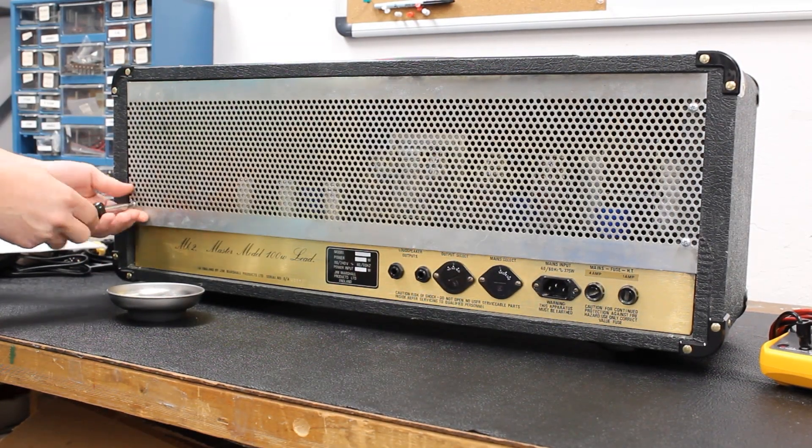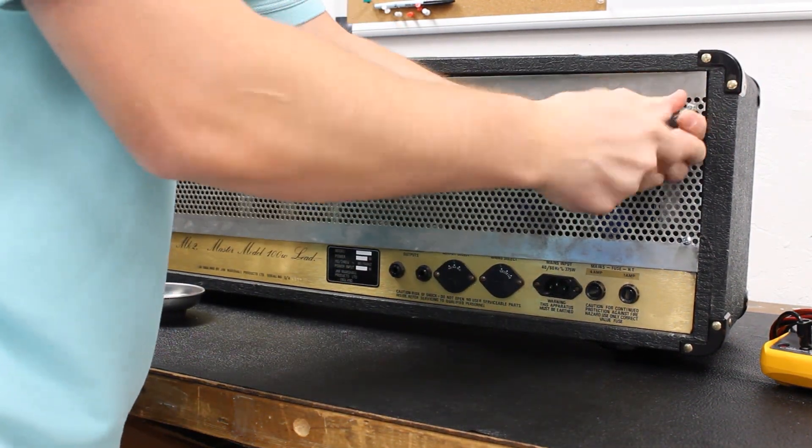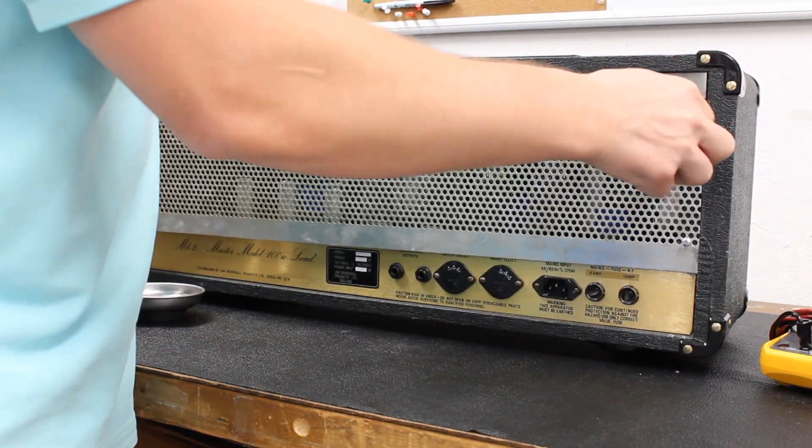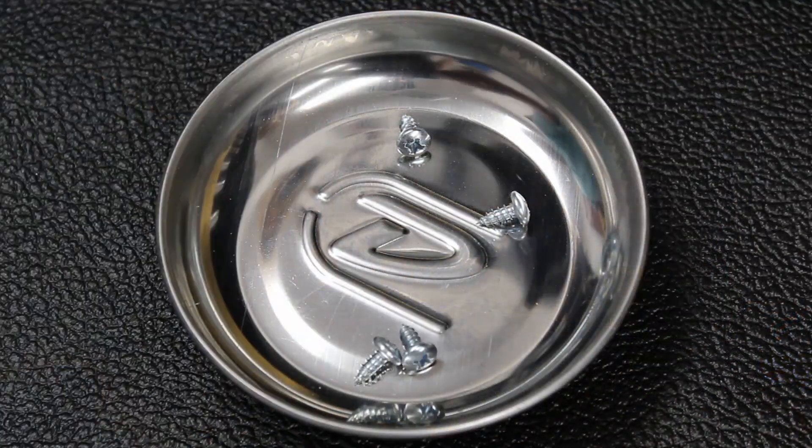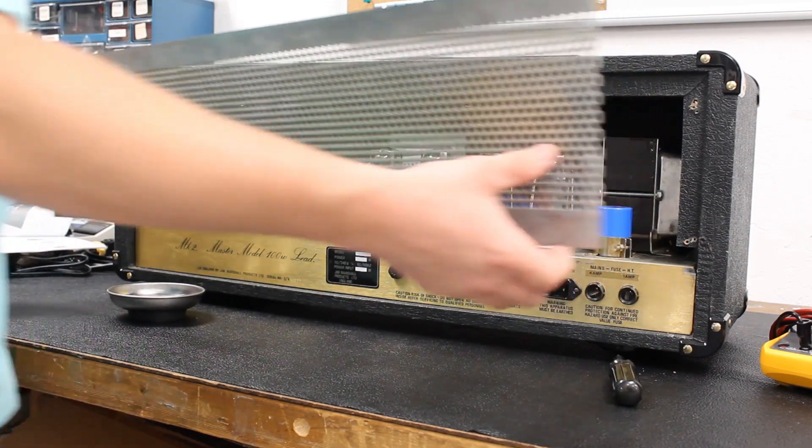We will start by disassembling the amp to gain access to the internal circuitry. Before starting this process, ensure that your amp is turned off and unplugged. If you have recently played the amp, please allow plenty of time for the tubes to cool down before starting.